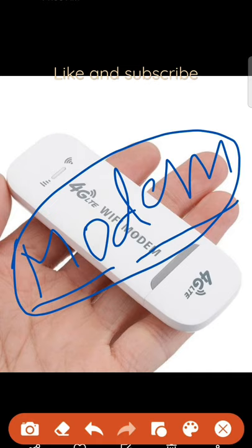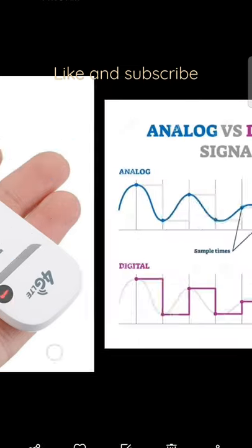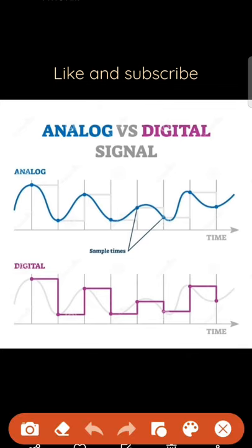Modulation means whenever we are converting analog signals into digital ones, it is modulation. And whenever we are converting digital signals into analog ones, it is demodulation. Hope you like this video and got some valuable information.